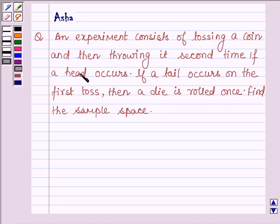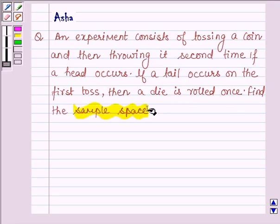If a head occurs, if a tail occurs on the first toss, then a die is rolled once. Find the sample space.